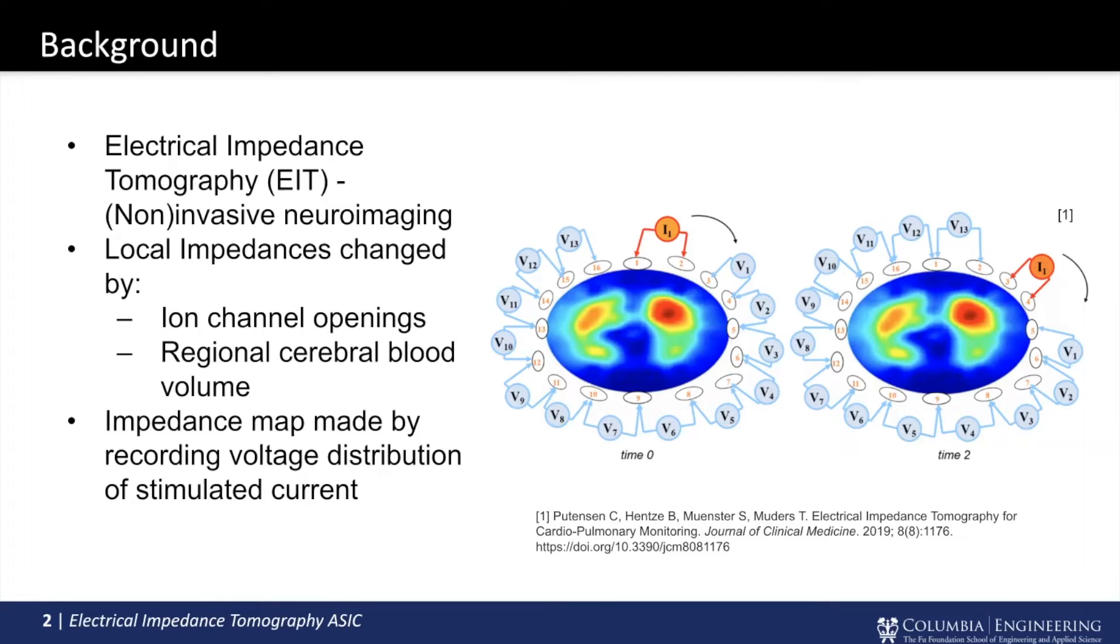However, in brain tissue, those local impedances change over time for a couple reasons. Either the ion channels and neural membranes open and close, which give more electrical pathways for charges to pass through, or the regional cerebral blood volume changes in locations where there is higher neural activity. And so by performing this electrical impedance tomography, we can take an impedance map of the structure and also take it over time to detect those changes.